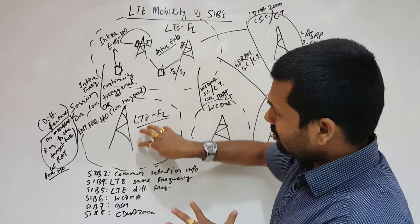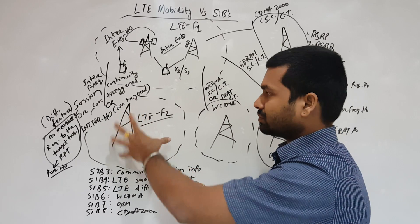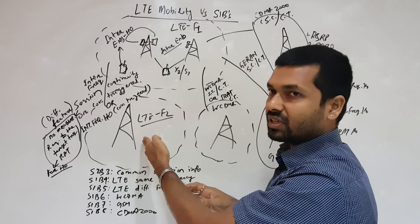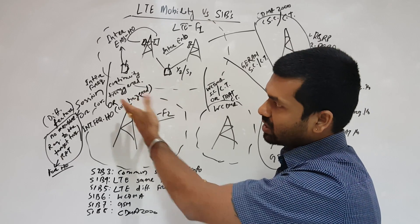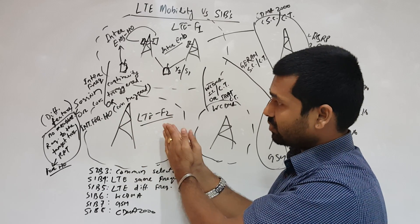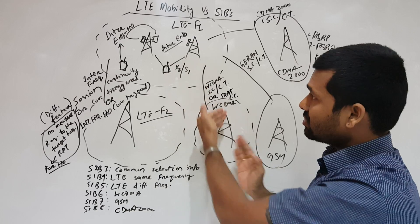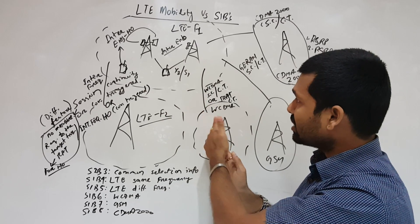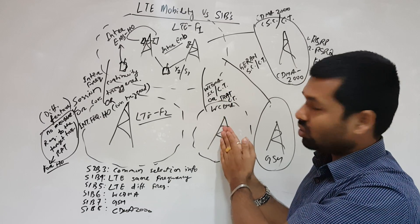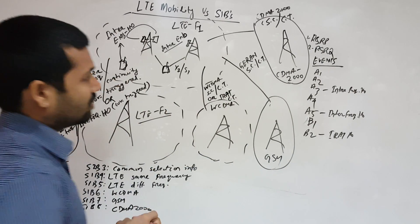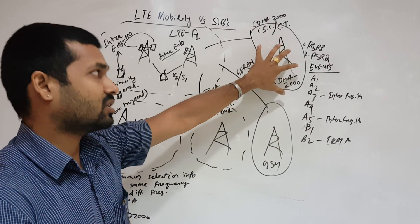The second area is LTE frequency 2. We can have reselection or handover to LTE frequency 2, or session continuity to frequency 2. The third area is WCDMA — we may have reselection towards the WCDMA network, session continuity, coverage-triggered, or IRAT handover. Then we have the GSM area and the CDMA2000 area.